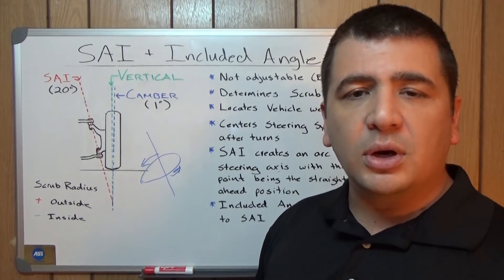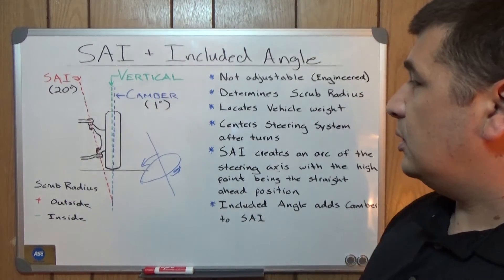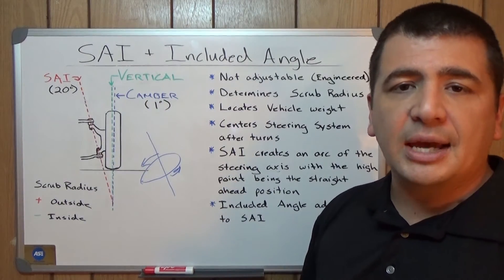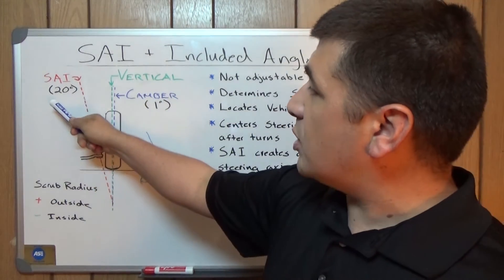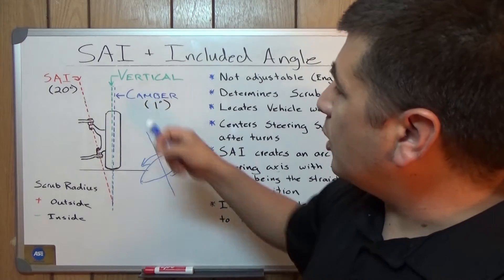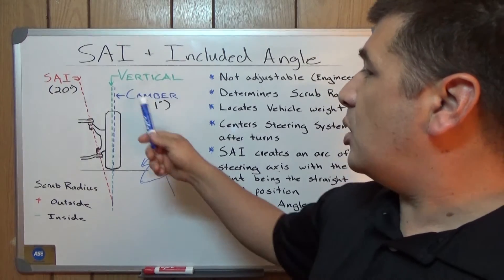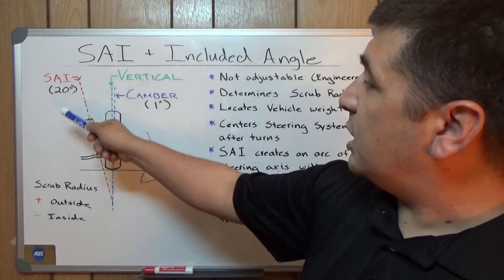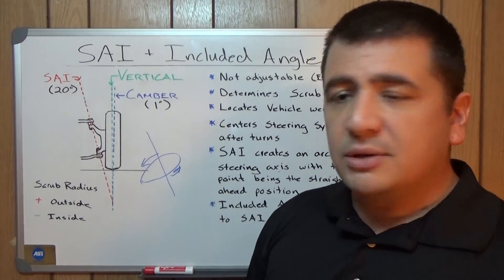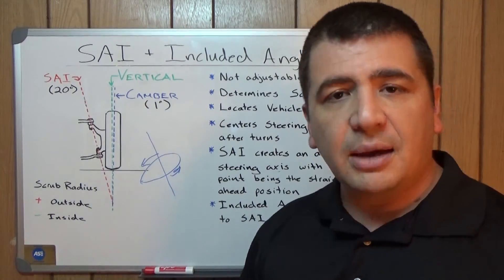Included angle is quite simply camber added to our steering axis inclination. So in this illustration, we have 20 degrees of steering axis inclination and we're showing one degree of camber. This is the difference between the vertical and the center line of the vehicle. So our included angle in this situation would be 21 degrees, because that's our steering axis inclination with our camber added to it. That's all included angle is — it's the SAI with the camber included.